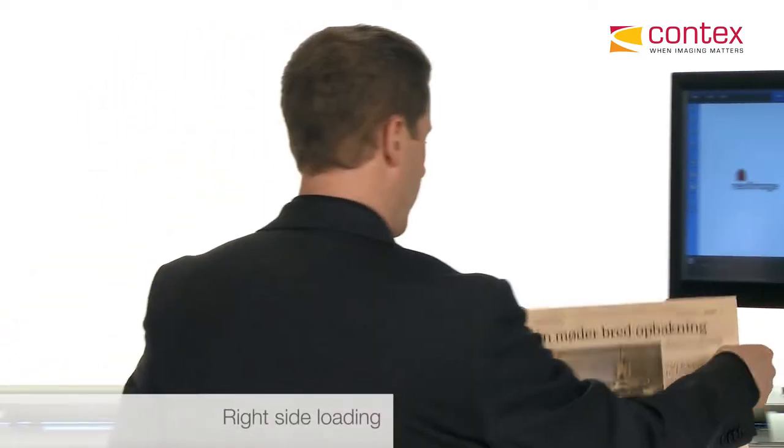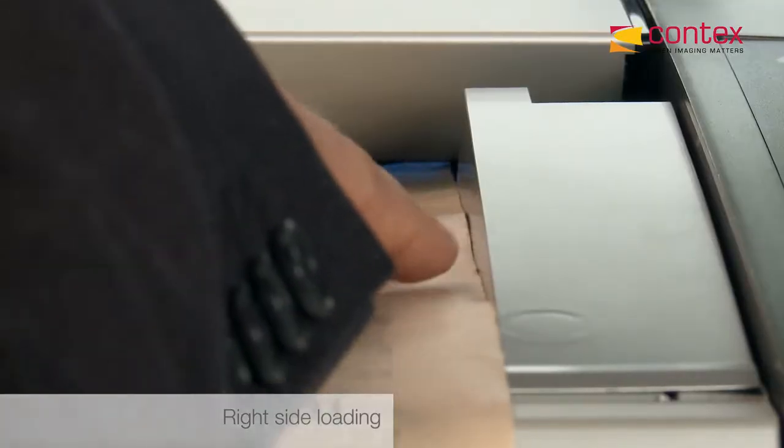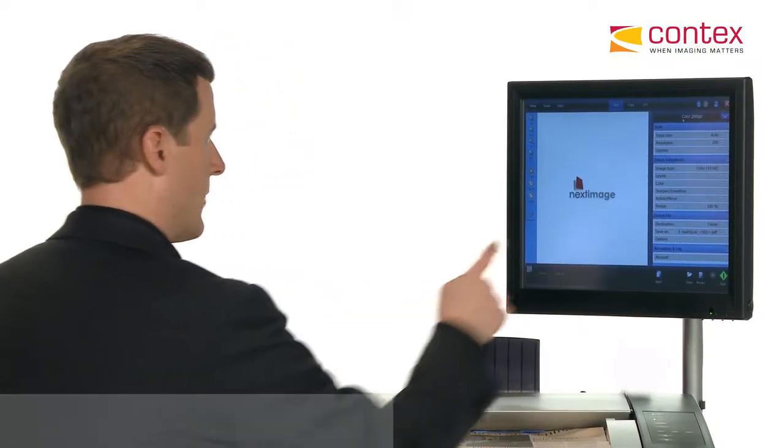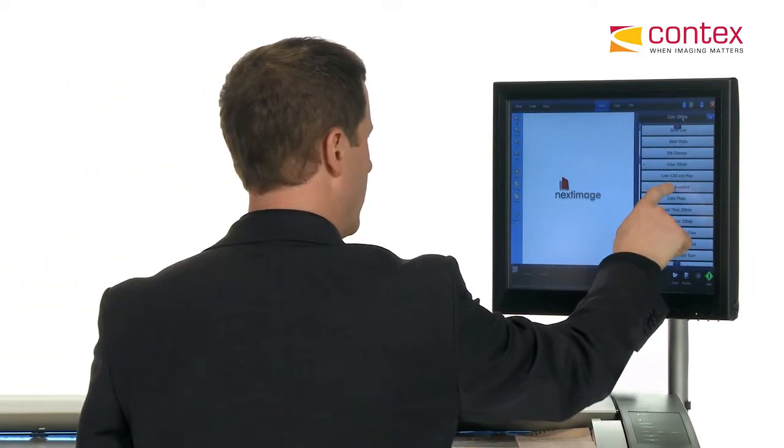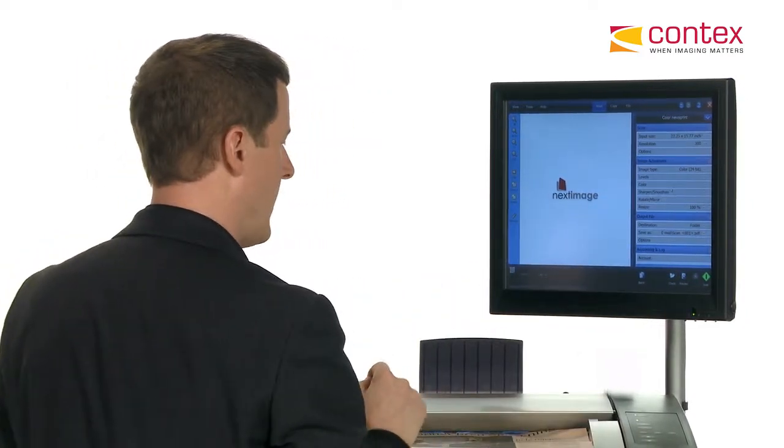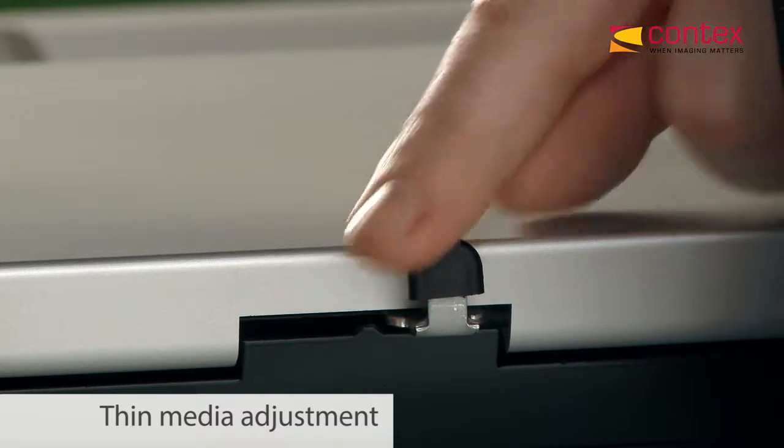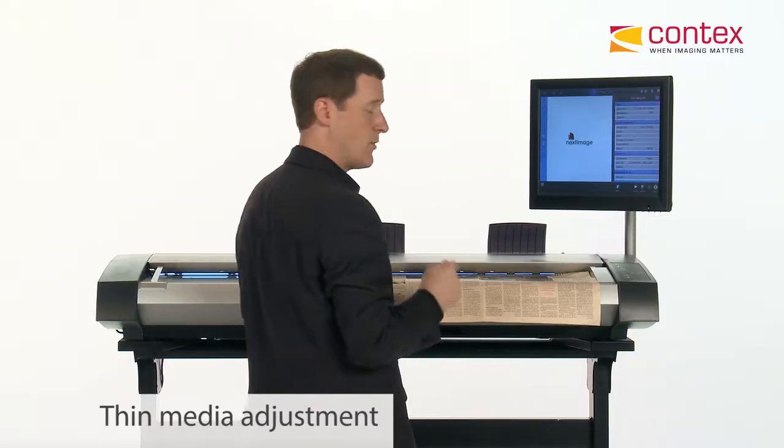Let's scan a piece of newsprint on the all-new Contex HD Ultra Scanner. So I'll feed my document on the right-hand side of the scanner. And now in my software, I'm going to make a simple adjustment, selecting color newsprint as my preset. And I'm going to make one simple switch on the scanner, switching my paper pressure for thin media. And now I'm ready to scan.